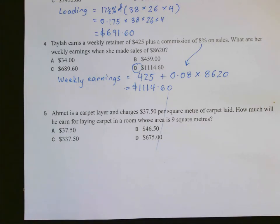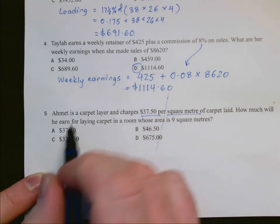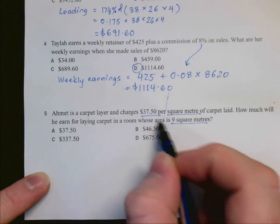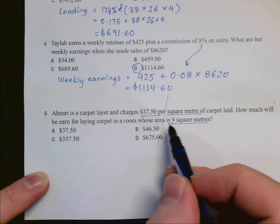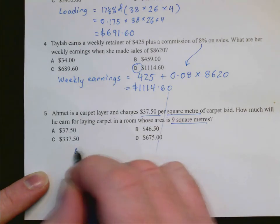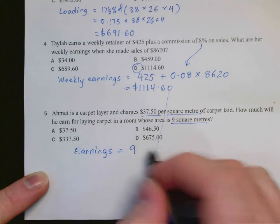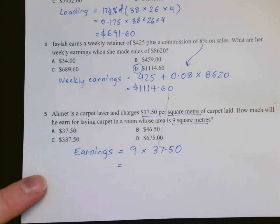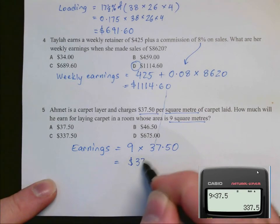Question 5, Ahmet is a carpet layer and charges $37.50 per square meter. We're finding out how much he earns for laying carpet in a room of 9 square meters in size. So this is piece work because he's earning per amount of work. So his earnings will be 9, because there's 9 square meters. And $37 for each of those, $37.50 for each of those square meters. And on a calculator we get that equals $337.50.